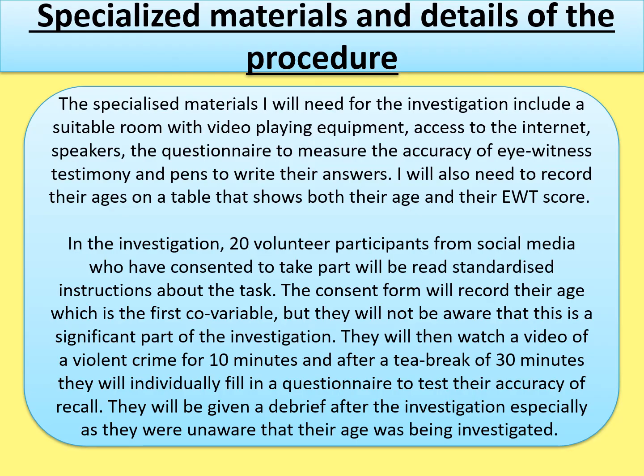For details of the procedure, say exactly what you are going to do. For example: in this investigation, 20 volunteer participants recruited from social media who have consented to take part will be read standardized instructions about the task. You could justify using a volunteer sample because the video of a violent crime makes this quite unethical, so a volunteer sample is the most ethical way of recruiting participants. The consent form will record their age — the first co-variable — but participants will not be aware that age is a significant part of the investigation, to prevent demand characteristics.